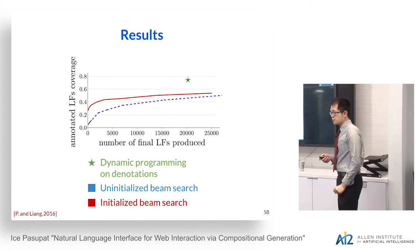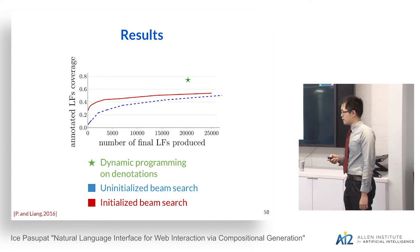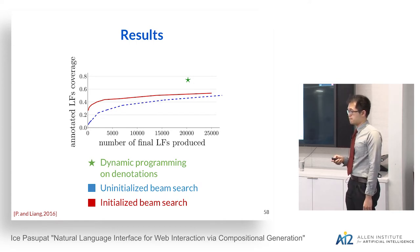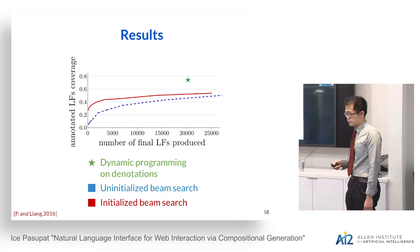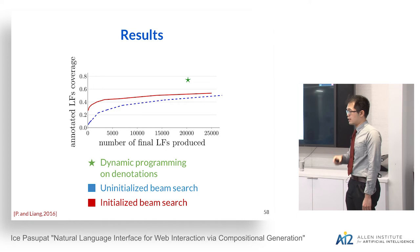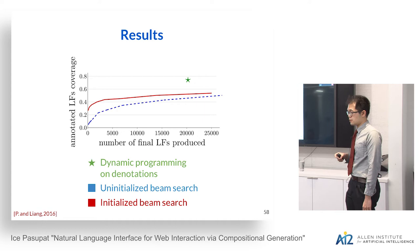Question from audience: Dynamic programming algorithms usually guarantee that if the correct answer is reachable, you will find it — do you have that guarantee? Answer: Yes. So the 76% represents the complete set of instances where the gold logical form is reachable by the grammar. The main caveat is the search size limit of 8, and the special case of counting where the answer is 1, which we forbid.